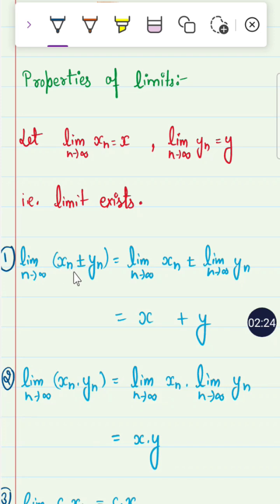If limit of (Xn ± Yn), then limit of Xn contributes on both sides which gives you X ± Y. In the product rule, limit as n→∞ of Xn·Yn equals X·Y.